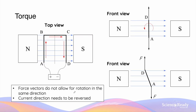Let's look at what happens to the rotation of the armature when it reaches the vertical position and after it goes past. As discussed, when the armature is in a vertical orientation, there will be no torque acting on it, as the two forces are parallel to the plane of the armature.